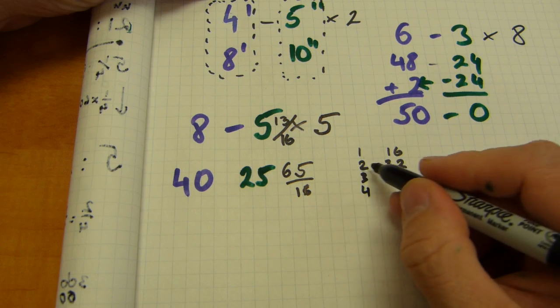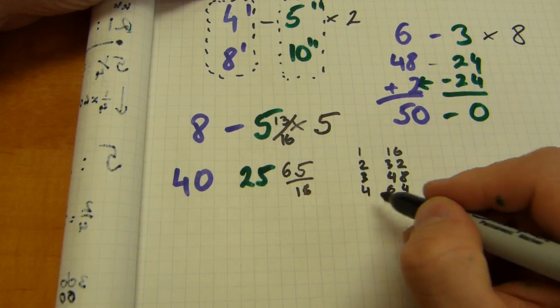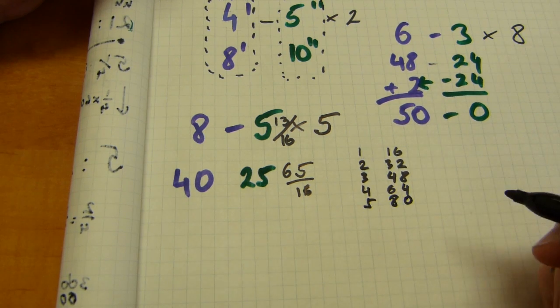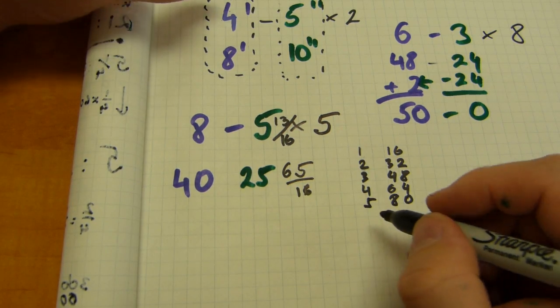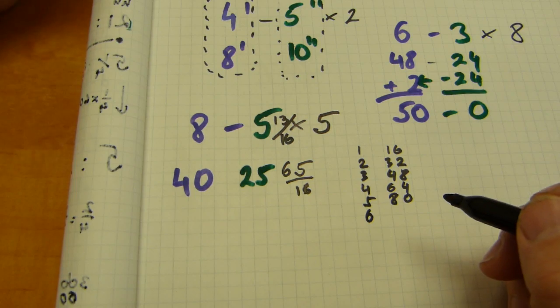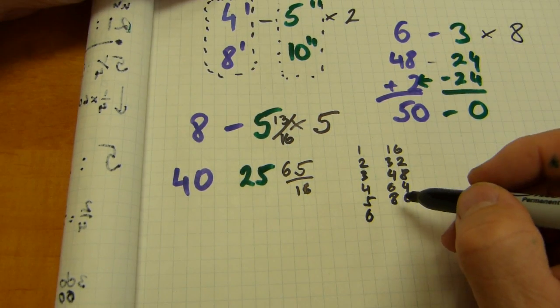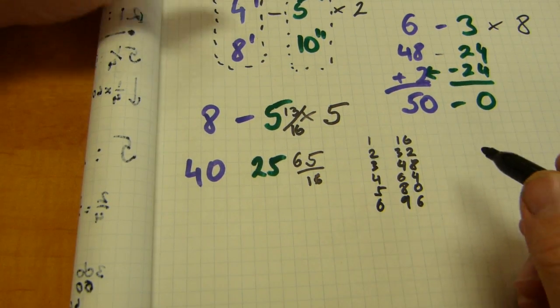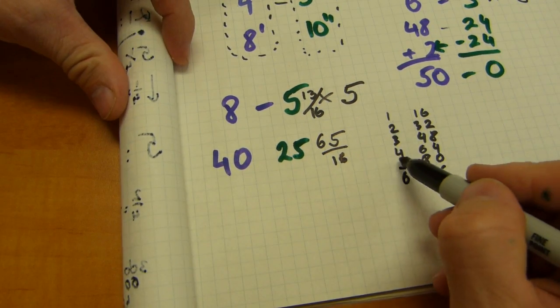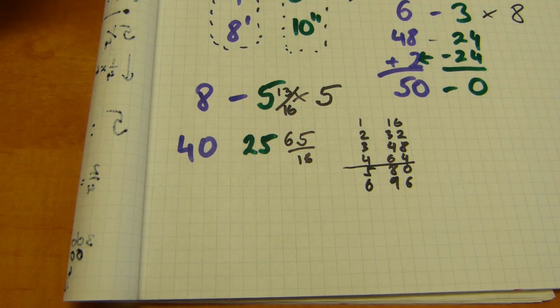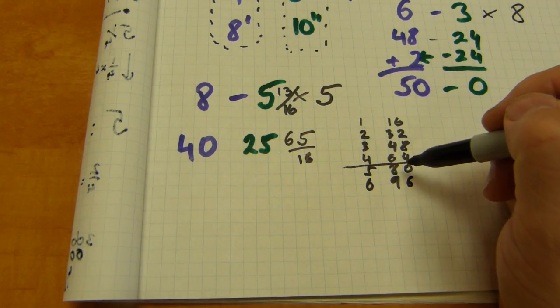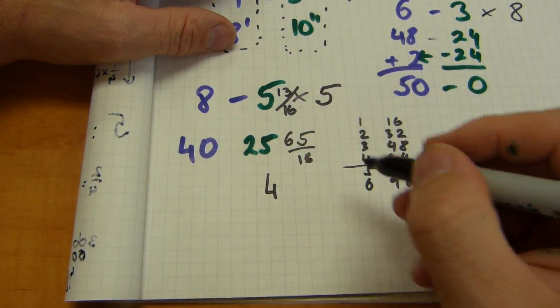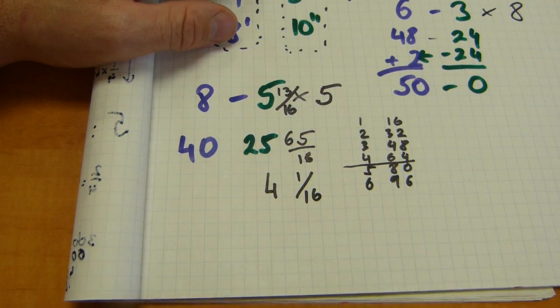For 4 by 16 I'm gonna double 2 by 16, so that's gonna be 64. For 5 by 16 I'm gonna add 64 plus 16, that makes 80, and maybe one more: 6 times 16 will be 96. Out of these multiples of 16, you can see that 4 units of 16/16ths can be made out of 65/16ths, so 65/16ths is 4 and 1/16.